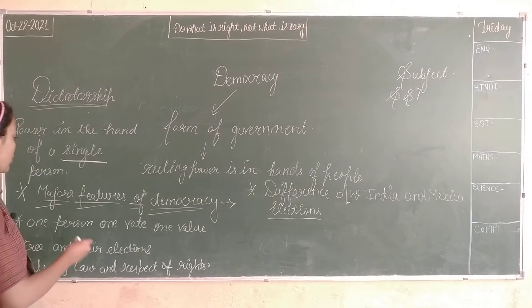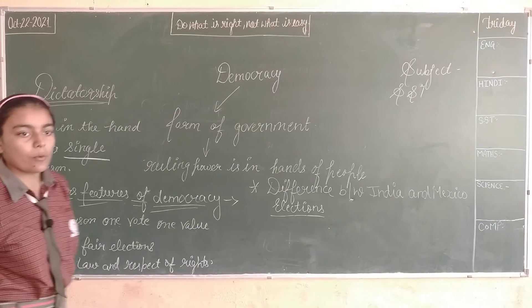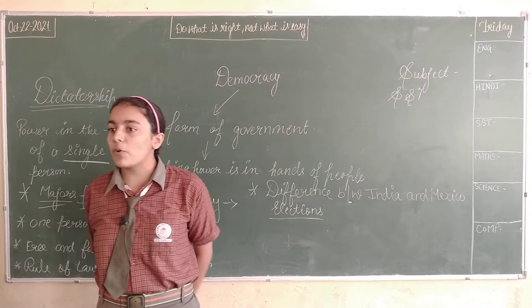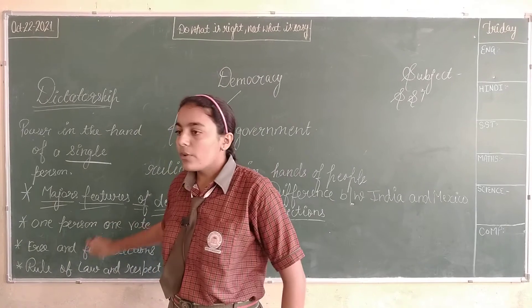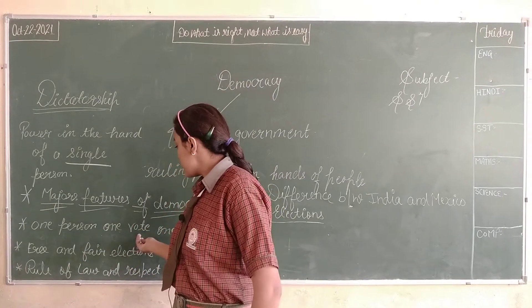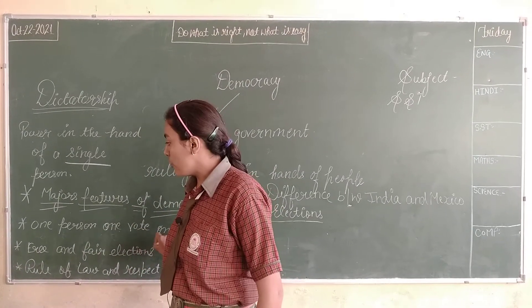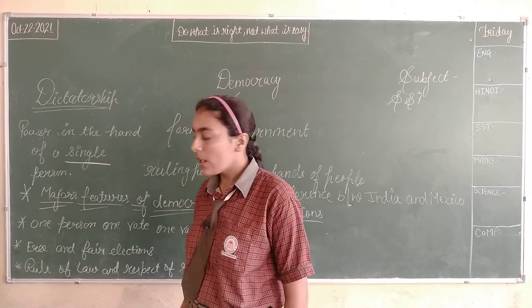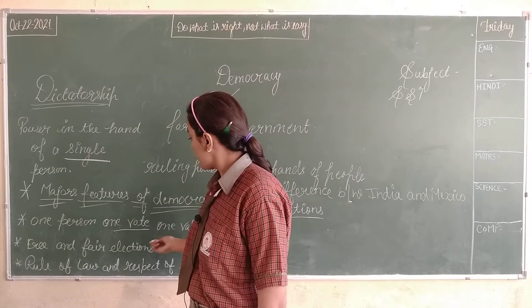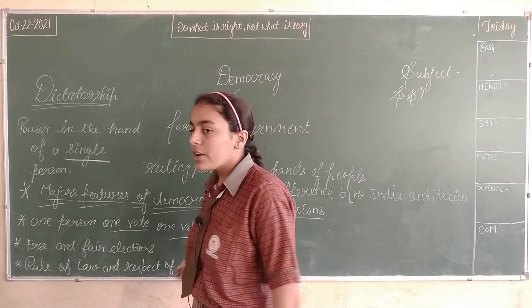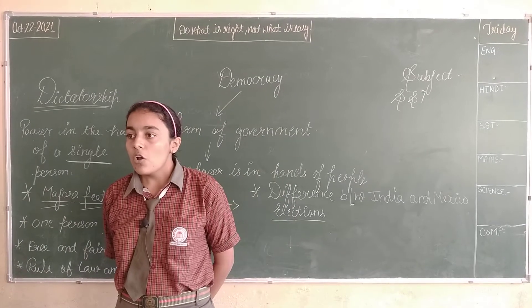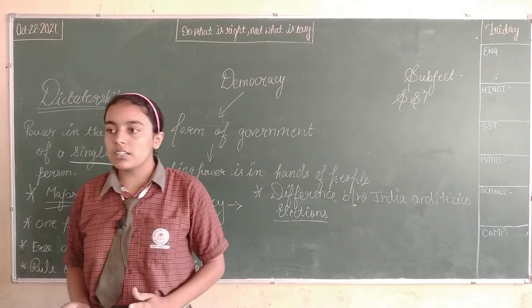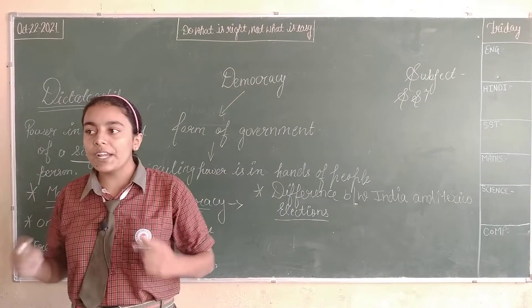Our next topic is the major features of democracy. There are three major features. The first one is: one person, one vote, one value — in India, all adult citizens have the right to vote.